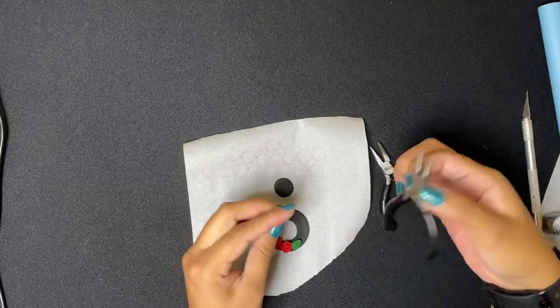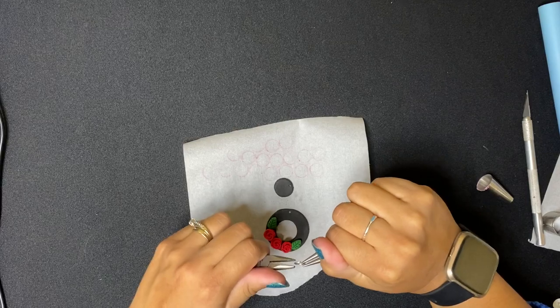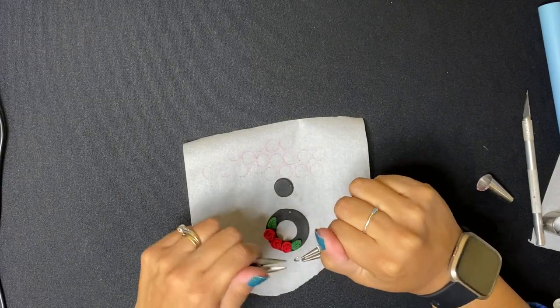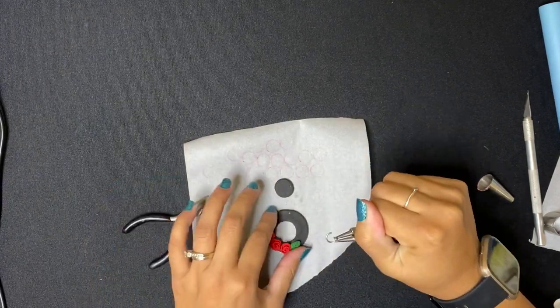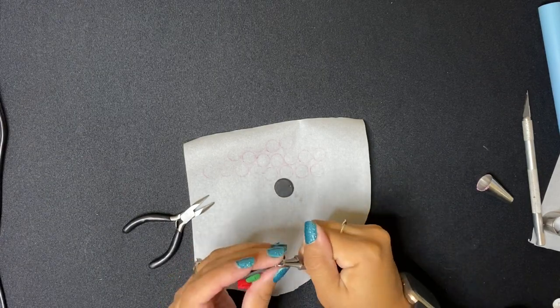Now it's time to attach our metal ring. If you have pliers, those are probably easiest, but if not, you could probably use a small set of tweezers. You'll just pry it open a little bit, put it through one side, put it through the other side, and pry it back closed.